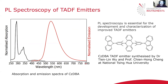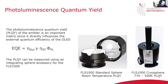For simple spectral measurements, the absorption and emission spectrum can be measured. More importantly, the photoluminescence quantum yield can be measured using the FLS1000. The photoluminescence quantum yield tells you how efficient the emitter is — it's the ratio of the number of photons absorbed to the number of photons emitted. This is crucial for developing high efficiency OLEDs because the external quantum efficiency of the OLED is directly proportional to the photoluminescence quantum yield.